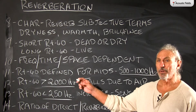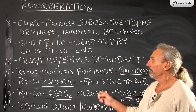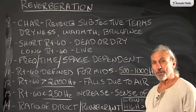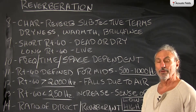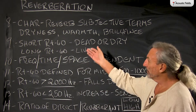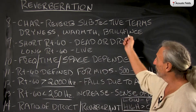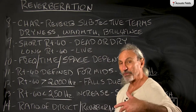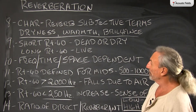Let's continue our discussion of reverberation and look at some characteristics of reverb. We have to use subjective terms because human beings have a mind and a heart, so it's always a balancing act between thought and feelings. Some subjective terms we can use for reverberation: dryness, warmth, brilliance. There are some feeling terms you could use.